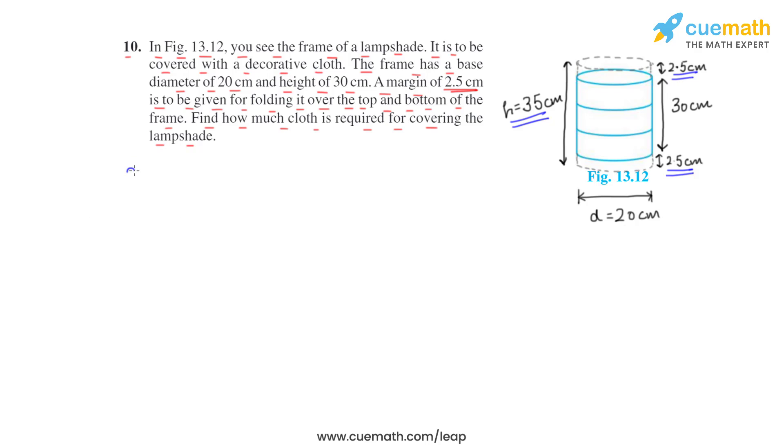So, let us write this. Diameter is given 20 cm, it means radius will be 20 by 2, which is equal to 10 cm.